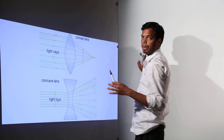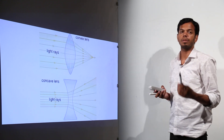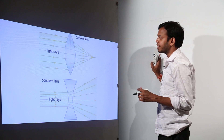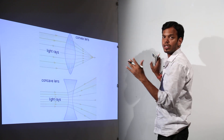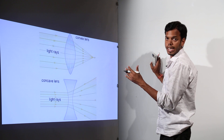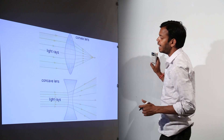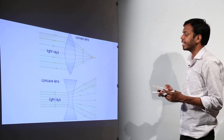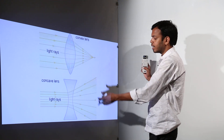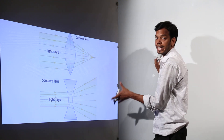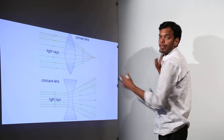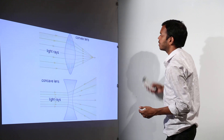All the rays which are coming parallel to the principal axis — we will bring that point also into the picture. All these rays coming parallel towards the lens are meeting at the same point. And that is exactly what the concave lens is also doing but in the opposite manner. Here the rays are getting split up, diverging in nature, whereas in convex they are converging towards one point.